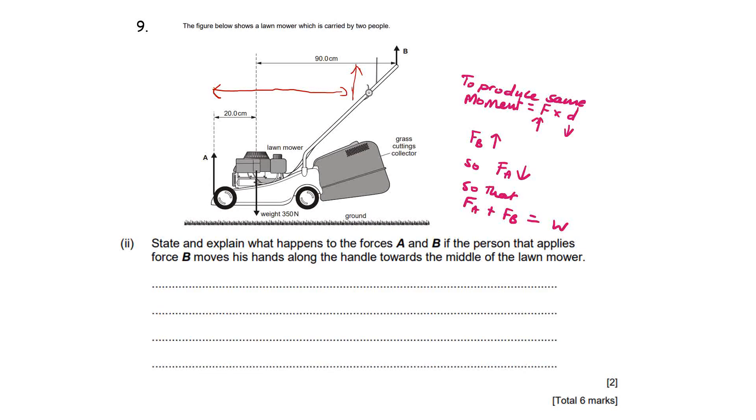And so in order to produce the same moment, if the distance is shorter the force that they apply at B would have to increase. So the force at B has to increase, and what that means is that the force exerted upwards at A has to decrease.